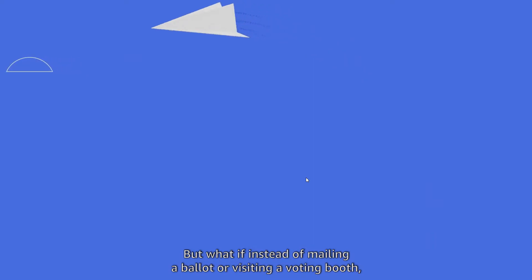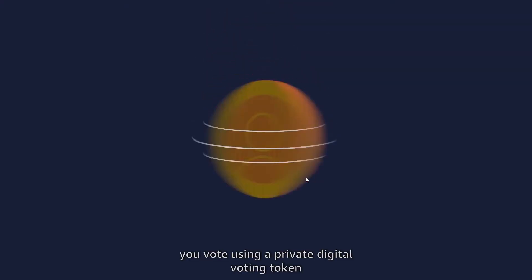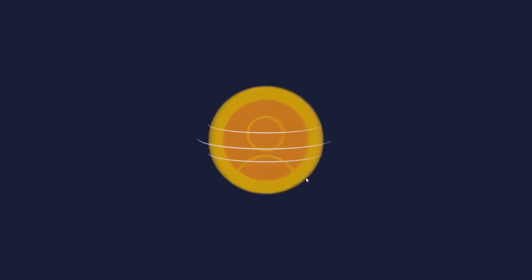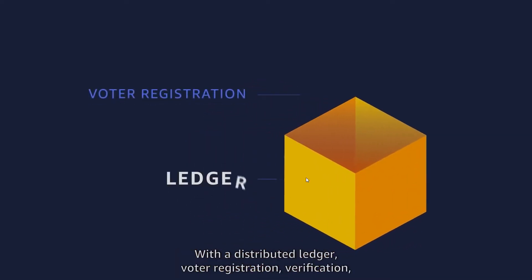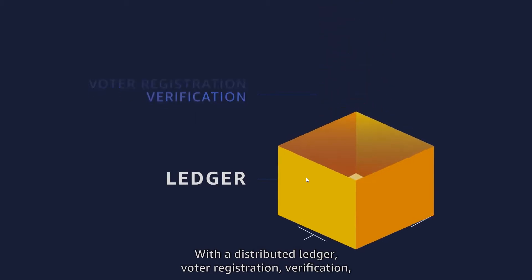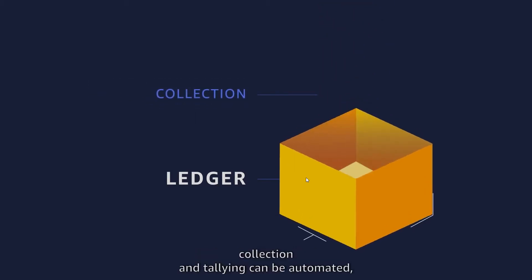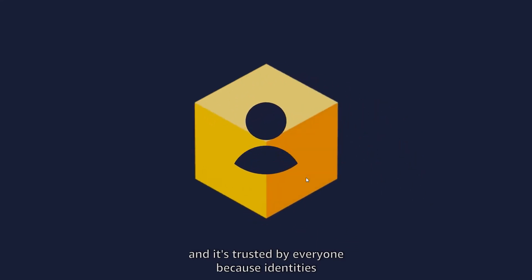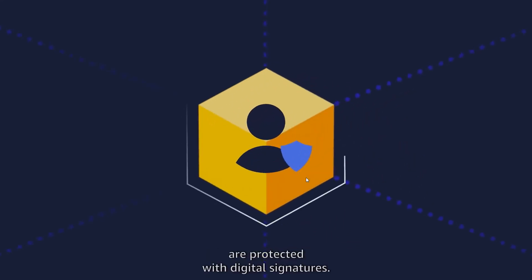But what if instead of mailing a ballot or visiting a voting booth, you vote using a private digital voting token that's linked to your identification? When you register to vote with the distributed ledger, voter registration, verification, collection, and tallying can be automated — and it's trusted by everyone because identities are protected with digital signatures.